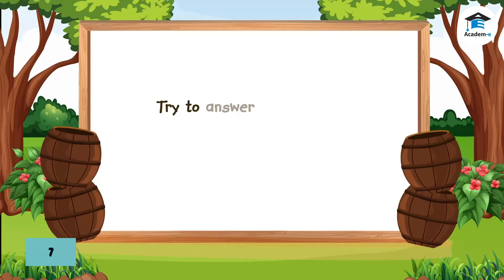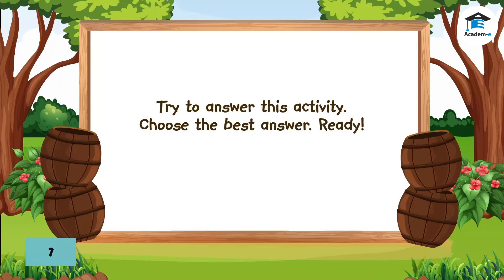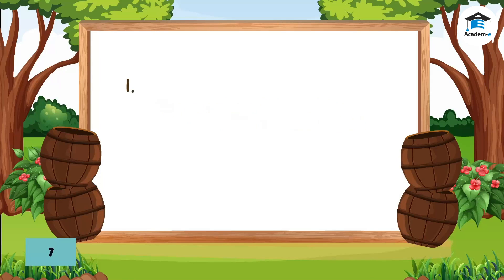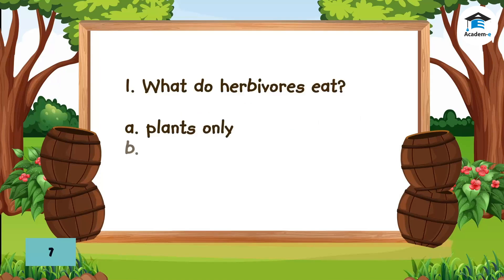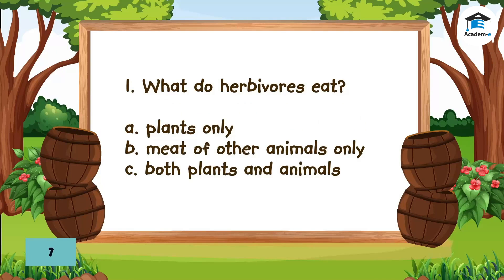Try to answer this activity. Choose the best answer. Question 1: What do herbivores eat? A. Plants only. B. Meat of other animals only. C. Both plants and animals. The answer is A. Plants only.